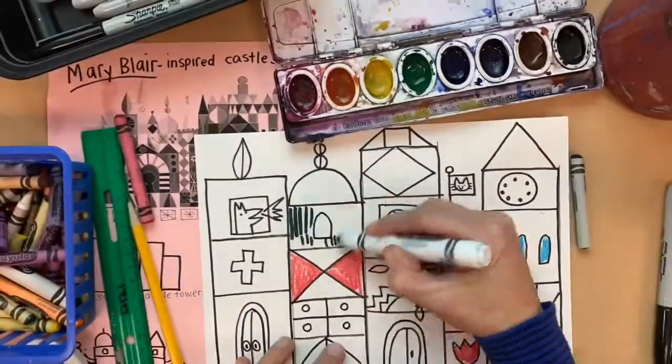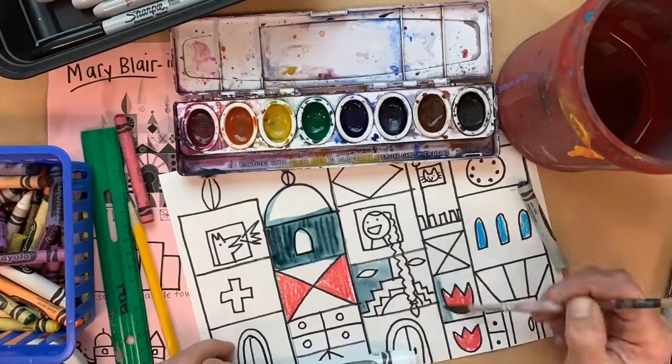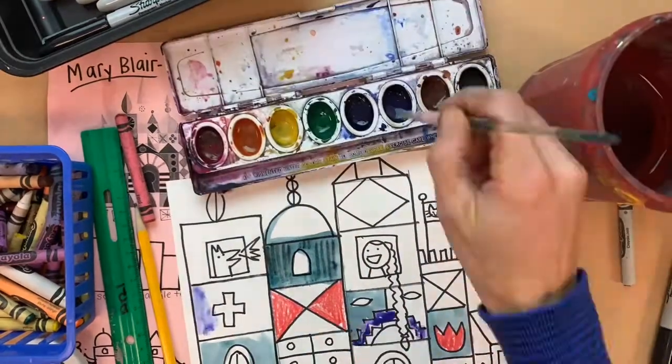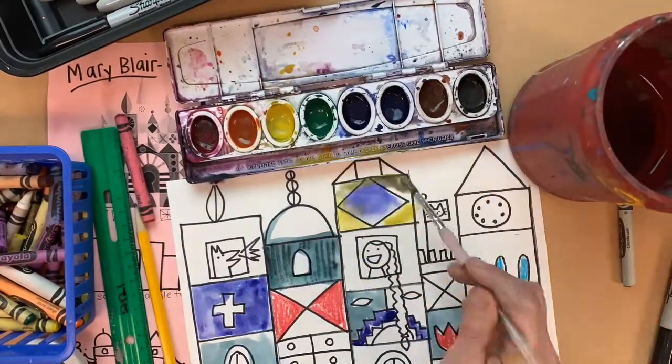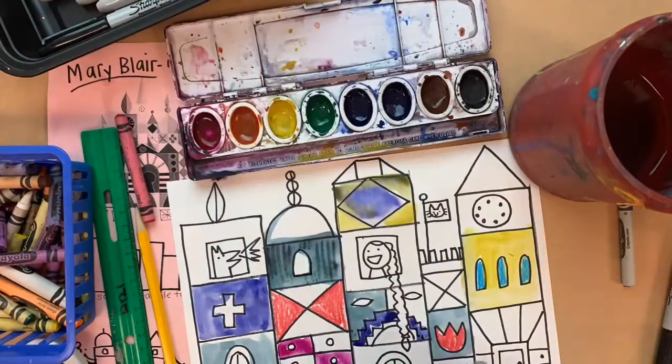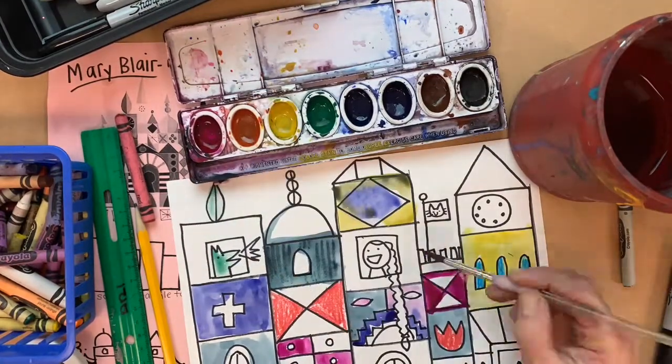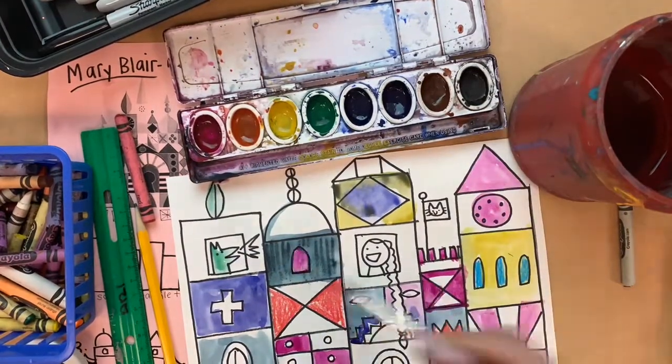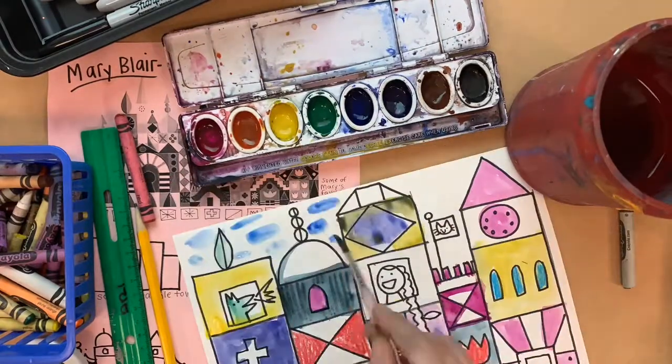Here's a Mary Blair style castle I made with lots of details. I traced the edges in Sharpie. I tried the marker and water technique. And then I ended up using a watercolor paint to fill in all the little sections. Use whatever tools you've got.